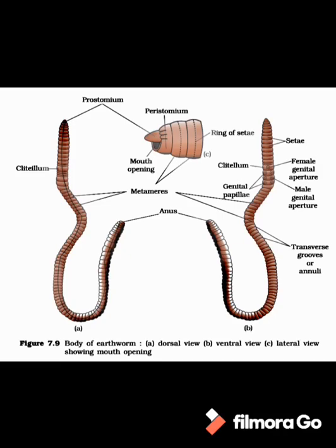The dorsal side of the earthworm is identified by the presence of the mid-dorsal line, which is the impression of the dorsal blood vessel, while its ventral surface is identified by the presence of the genital opening. Earthworm belongs to phylum Annelida because its body is segmented — more than 100 segments, i.e., 120 segments are present in its body.